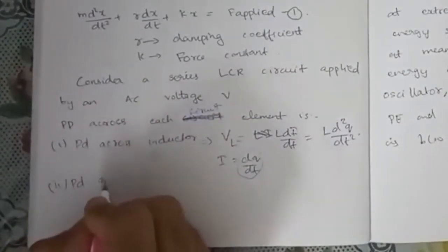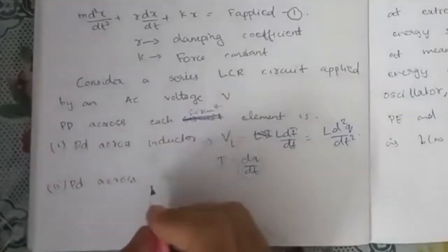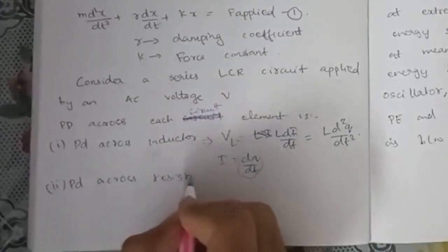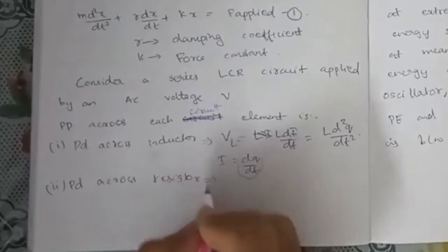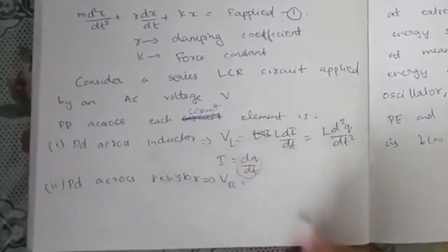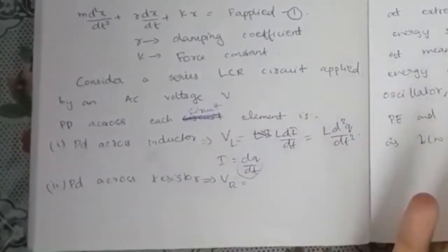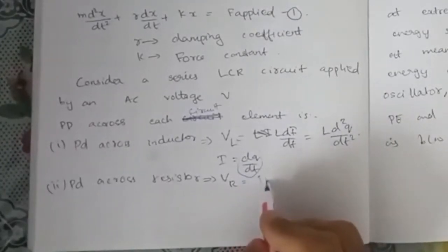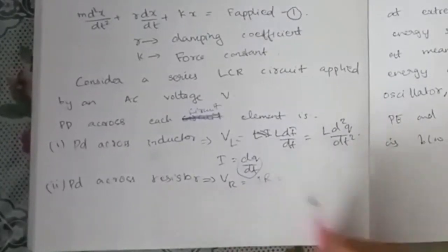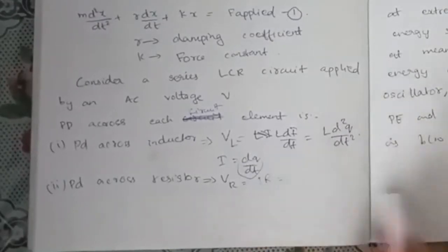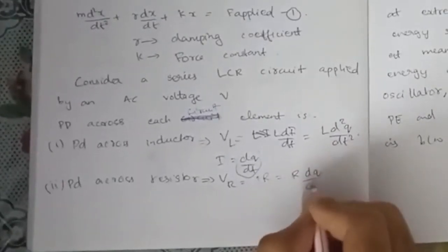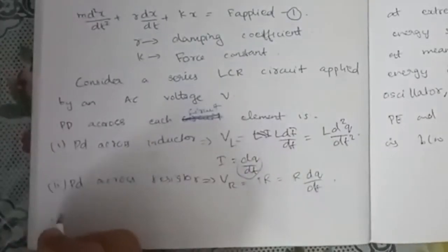The potential difference across the resistor — we represent it as VR. Then V is equal to IR. The value of I is dQ/dt, so VR equals R into dQ/dt. This is the value of VR.